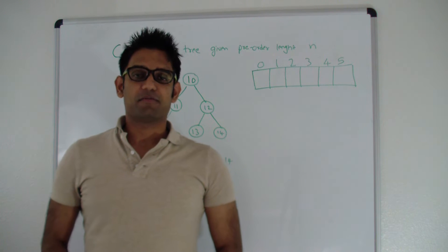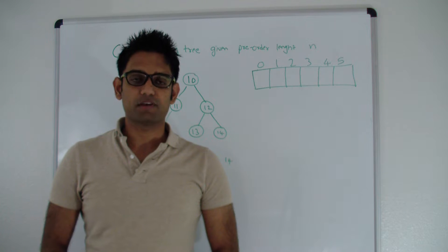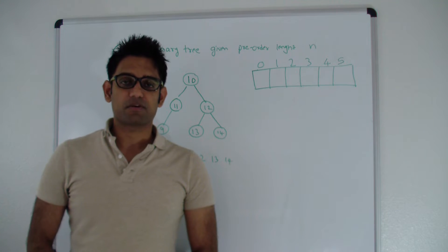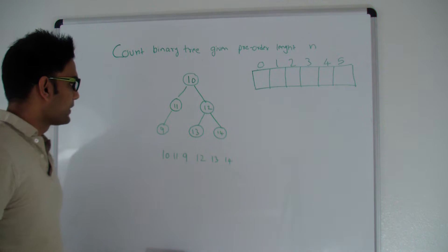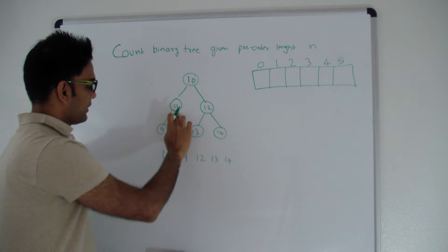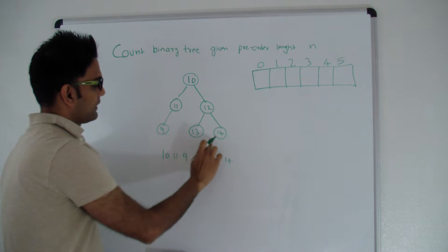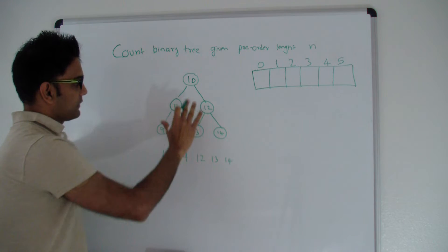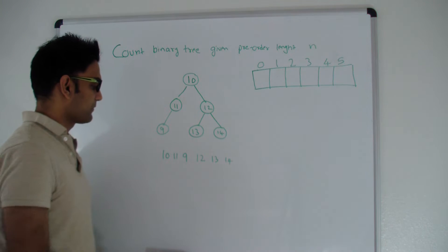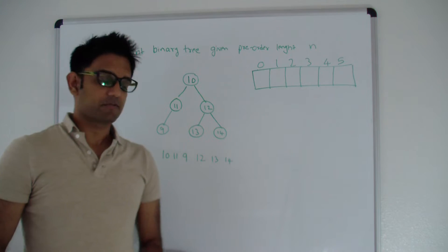Hello friends, my name is Tushar and today we are going to discuss the question: count the number of binary trees possible given a pre-order sequence of length n. Given a binary tree, the pre-order sequence visits the root first, then goes left, then right. We will use dynamic programming to solve this question.